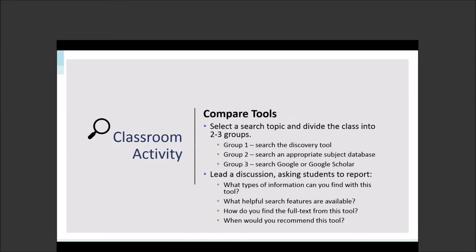Here's a classroom activity to have students think about discovery and compare tools. You can select a search topic and divide the class into two to three groups: one group searches the discovery tool, another searches a specialized database, and another searches Google or Google Scholar. Then lead a discussion after three to five minutes about each tool, encouraging students to teach one another by comparing the features they saw and whether they would recommend this tool based on the results they got. You could do this as a guided activity creating a comparison table on the whiteboard, or do it through peer teaching where students pair up — one searches in discovery, one in a subject database — and they compare results and discuss what they found.